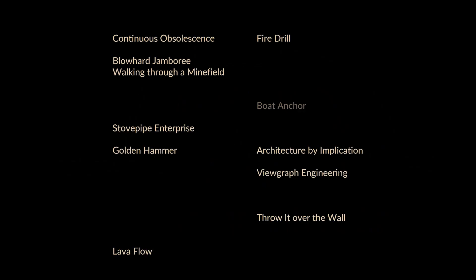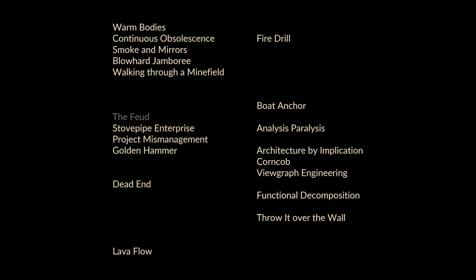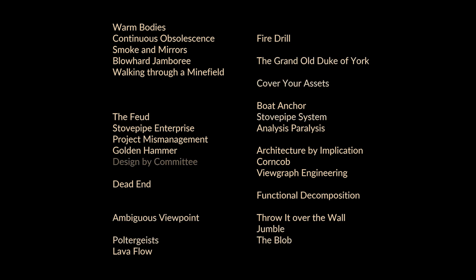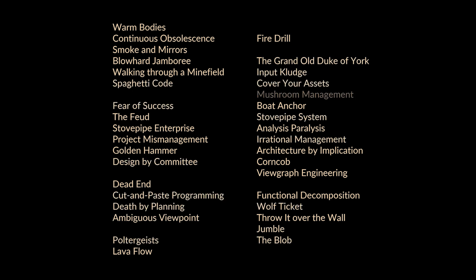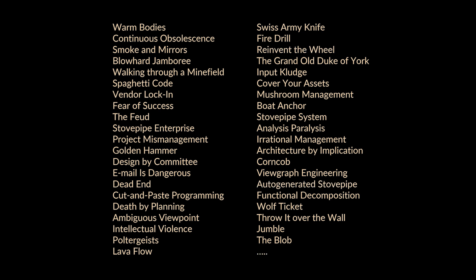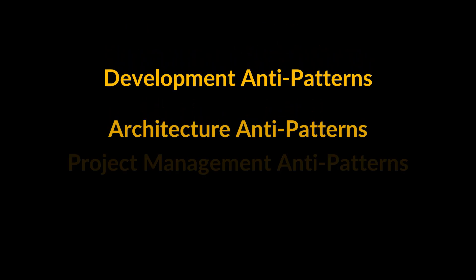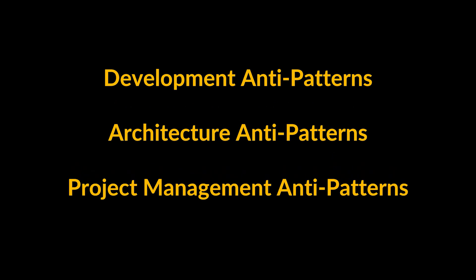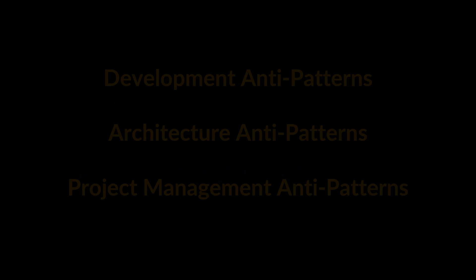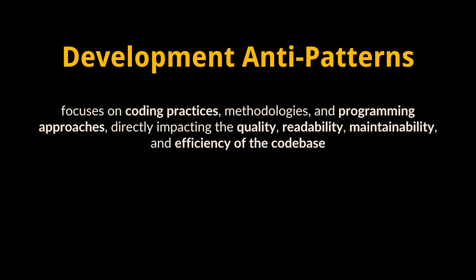Anti-patterns are mainly divided into three categories: development anti-patterns, architecture anti-patterns, and project management anti-patterns. Let's zoom in on each one. Development anti-patterns focus on coding practices, methodologies, and programming approaches that directly impact the quality, readability, maintainability, and efficiency of the code base.